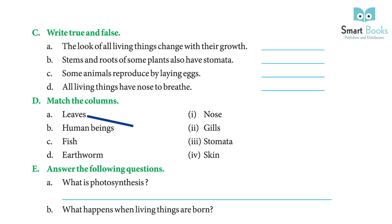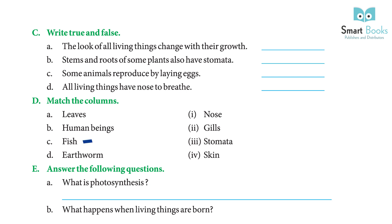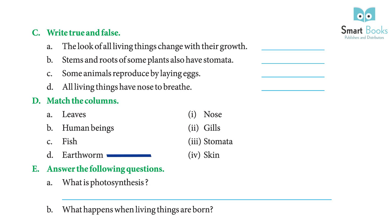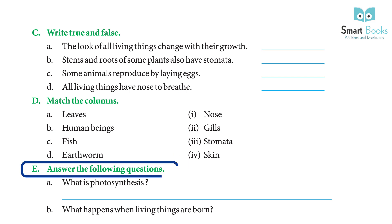D — Match the columns. A: Leaf — Answer: Stomata. B: Human beings — Answer: Nose. C: Fish — Answer: Gills.